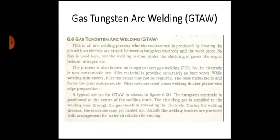First of all, gas tungsten arc welding or GTAW. Gas tungsten arc welding is an arc welding process where coalescence is produced by heating the job with an electric arc which is struck between a tungsten electrode and the workpiece.